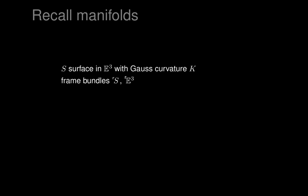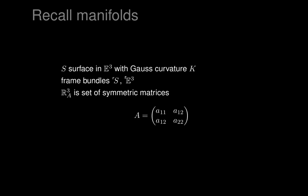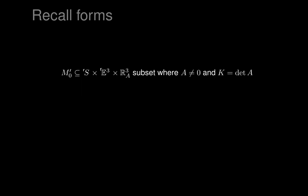We wrote the frame bundles as little corners next to the surface and to Euclidean three-dimensional space, and worked it out as a system initially on that product of frame bundles. We had to introduce additional variables to represent potential choices of shape operator, and then impose a condition on the shape operator matching its determinant with the Gauss curvature. We write R³_A for the set of all symmetric matrices — capital A is little a_ij — and insist those symmetric matrices will be used as potential choices of shape operator. The torsion was resolved by imposing that the curvature K must match exactly the determinant of A. That's the Gauss equation.